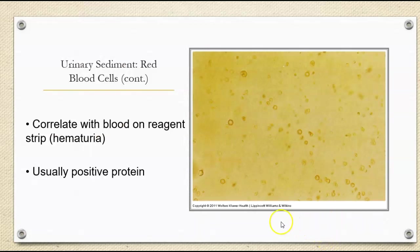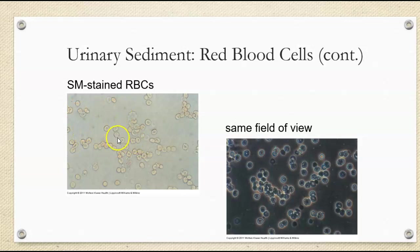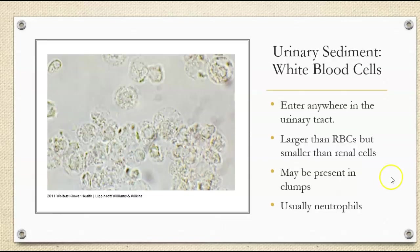These urine red blood cells — we want to correlate with the blood on the reagent strip. Usually we're going to see a positive protein as well. Here are some images using different types of microscopy and stain. Even though we don't use stain in the lab, this helps you really see on a slide the crenated cells. So you can see here — these are the crenated cells, these are normal-looking cells, and these are phase contrast.